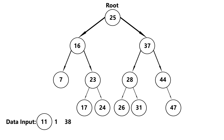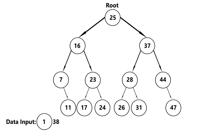11 is less than 25, so we go left. 11 is less than 16, so we go left again. And 11 is greater than 7, so it becomes the right child of 7. Inserting 1 now: 1 is less than 25, so we go left. 1 is less than 16, so we go left again. 1 is less than 7, so it gets inserted as the left child of 7.